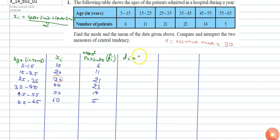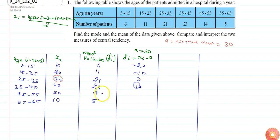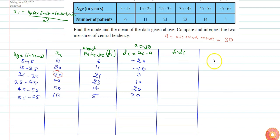We shall find the deviation from the assumed mean, let's call it di — the deviation from each Xi to the value A, where A is 30 in this question. So: 10 minus 30 is minus 20, 20 minus 30 is minus 10, 30 minus 30 is 0, 40 minus 30 is 10, and then 20 and 30. This column is for fi times di, since in the assumed mean method mean equals A plus summation of fi·di divided by summation of fi.